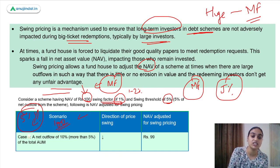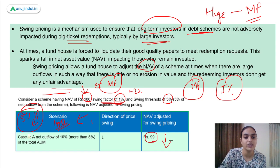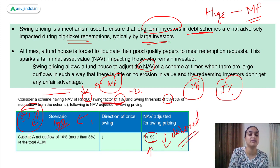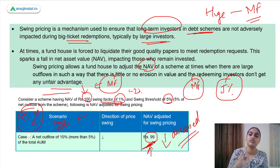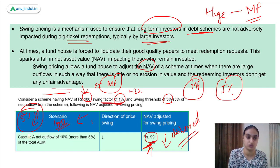So if the NAV was Rs 100 and you are exiting while others who remain invested would suffer, you will bear the cost of leaving. With a 1% swing factor, 1% of Rs 100 is Rs 1, so you will get Rs 99 when exiting. If there is a new investor who decides to enter during this distressed situation, they get the benefit of investing at just Rs 99. This mechanism is applicable only to open-ended debt mutual funds, excluding overnight funds and gilt funds.